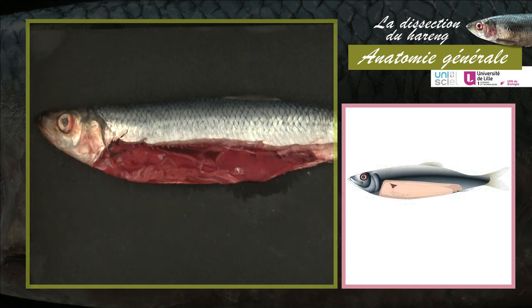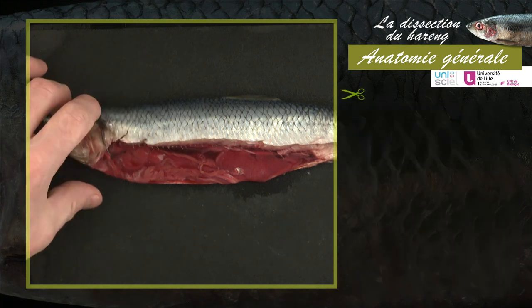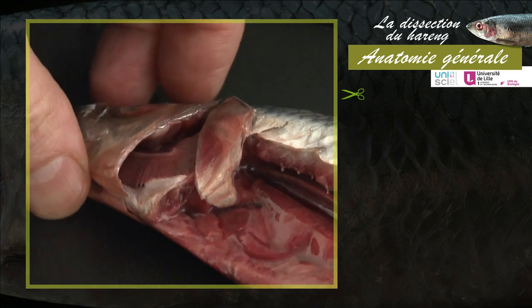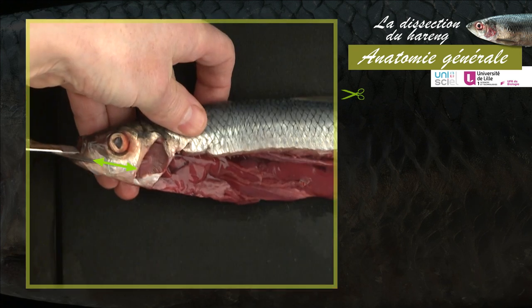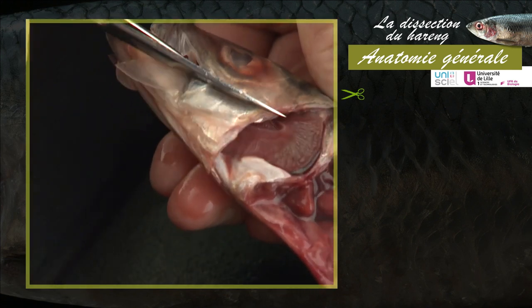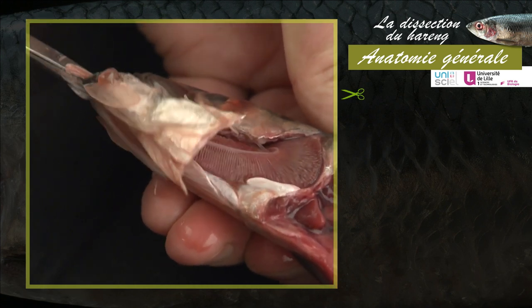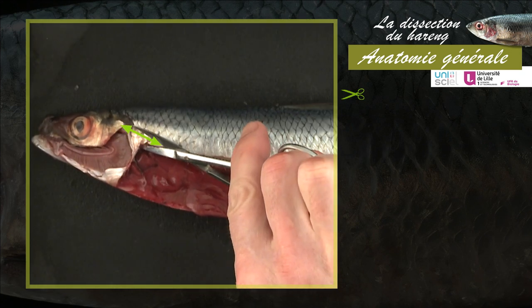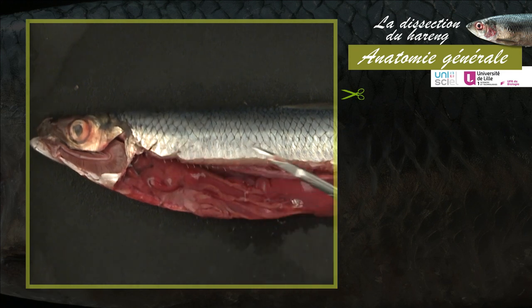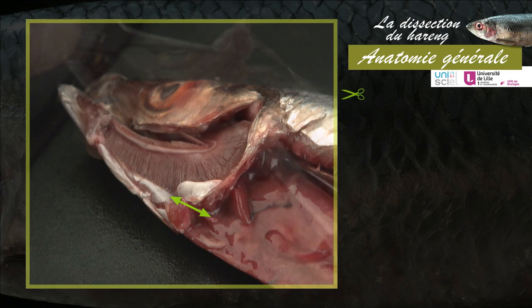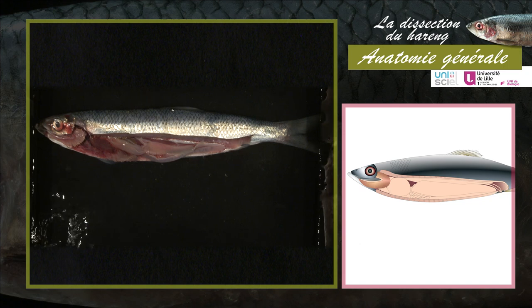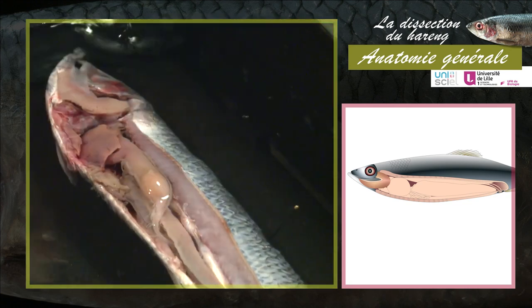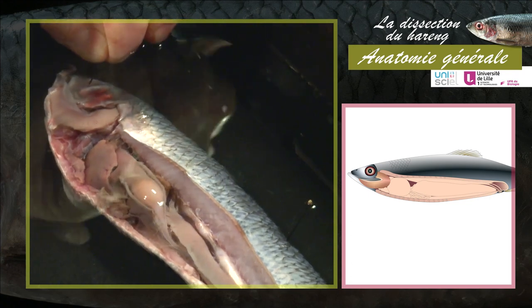Le hareng est déposé dans la cuve sur le flanc droit. Découpez ensuite l'opercule et la mandibule inférieure gauche pour observer les branchies. Coupez enfin la ceinture pectorale entre les branchies et le tronc de l'animal. La suite de la dissection sera effectuée dans l'eau. Fixez le hareng avec des épingles : une dans la nageoire dorsale, une au niveau de la tête, et une à la base de la nageoire caudale.